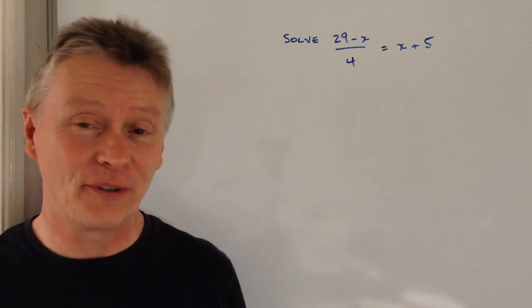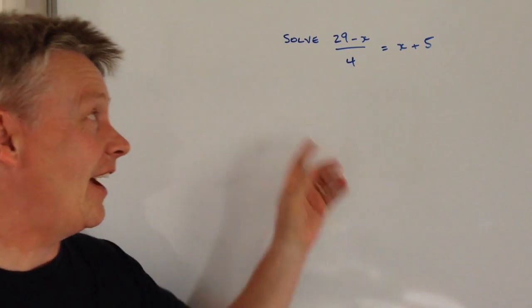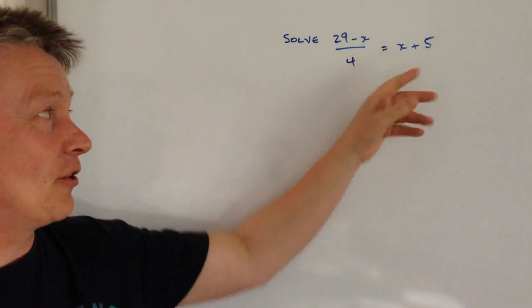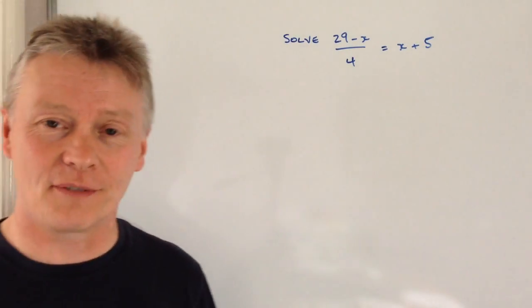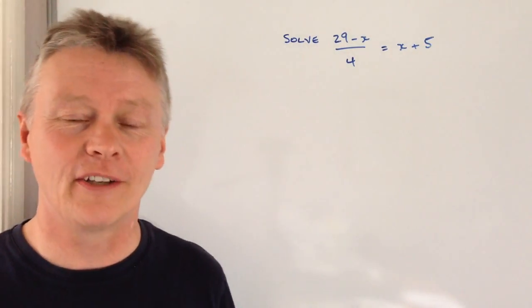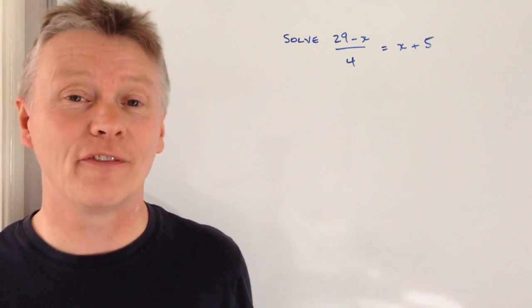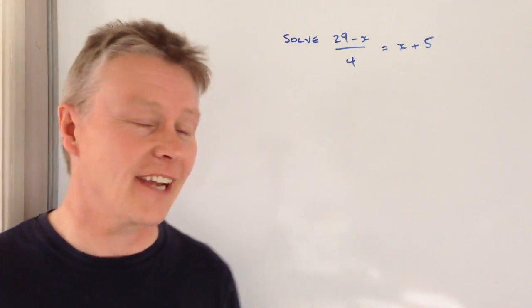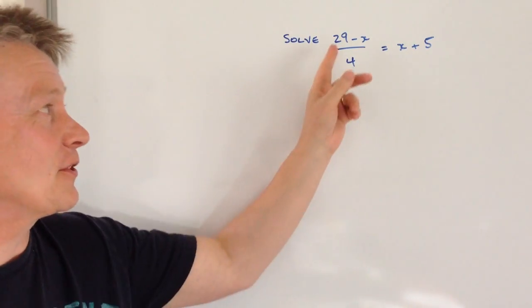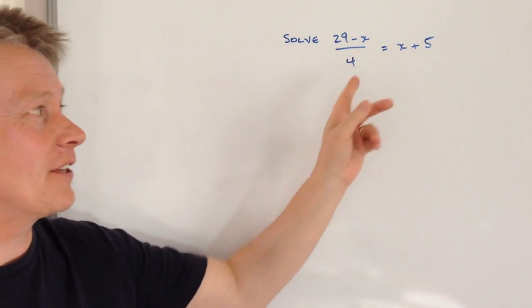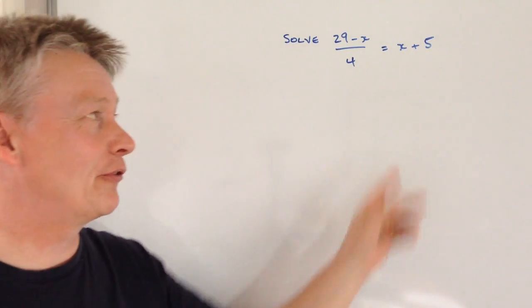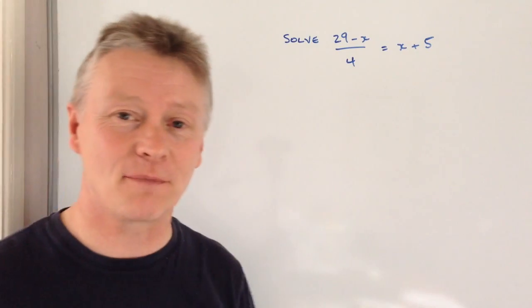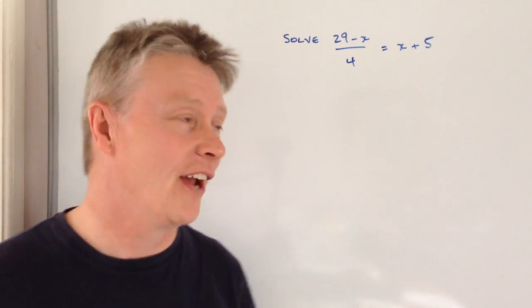Hi, in this particular video we're going to be looking at solving this, and by that we mean finding the value of x. So we've got 29 minus x divided by 4 equals x plus 5.